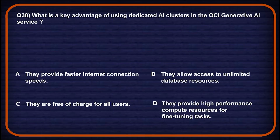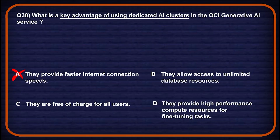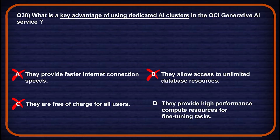Let's move on to question number 38: what is the key advantage of using dedicated AI clusters in OCI Generative AI? Option A: they provide faster internet connection speed — network speed is not a primary advantage, so wrong. Option B: they allow access to unlimited database resources — database access is unrelated to the purpose of AI clusters, so wrong. Option C: they are free of charge for all users — dedicated clusters require paid commitment, so wrong. Option D: they provide high-performance compute resources for fine-tuning tasks — dedicated clusters are optimized for fine-tuning and hosting custom models, so this is the correct one.